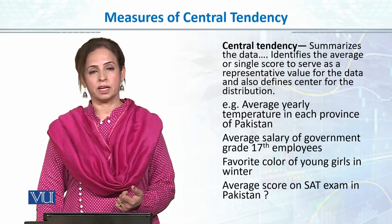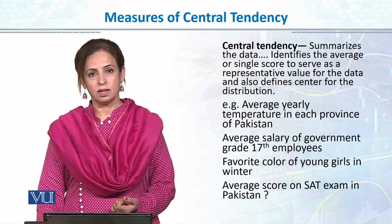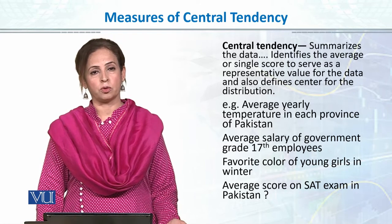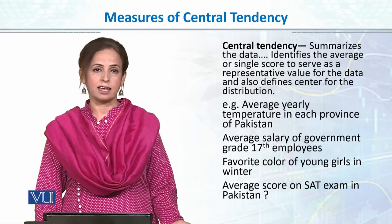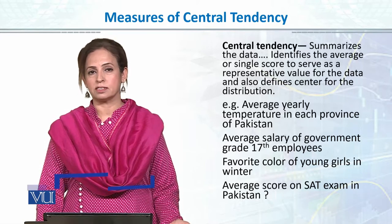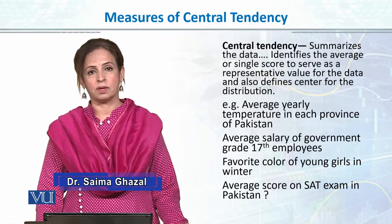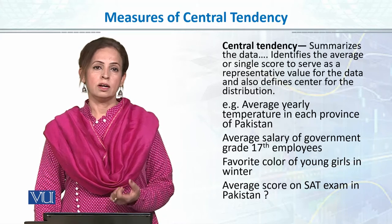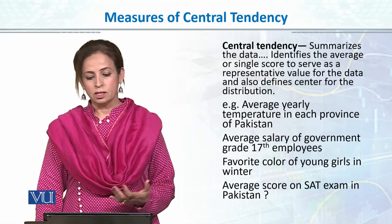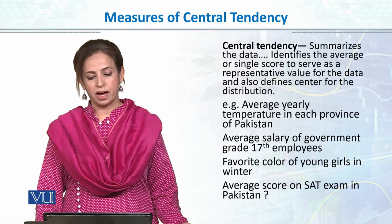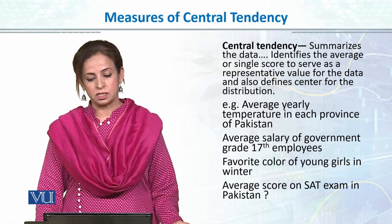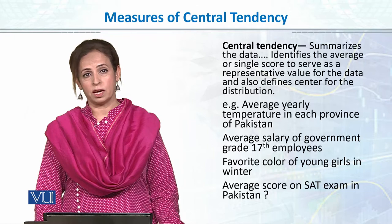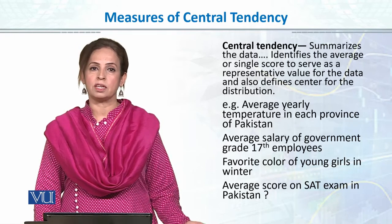We will be explaining and describing the data in just one single value. If I have 300 students appearing for an entry test and I have to report what is the average performance of students on that entry test, I can summarize the whole 300 data points into one single value by describing the average of the data, maybe describing the mean of the data. Measures of central tendency allow us to find the central value or central location in our data set. Central tendency basically summarizes the data, identifies the average or single score to serve as a representative value for the data, and also defines the center for the distribution.